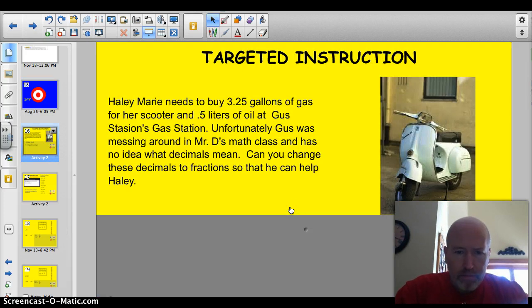Haley Murray needs to buy 3.25 gallons of gas for her scooter and 0.5 liters of oil at Gus Station's gas station. Unfortunately Gus was messing around in Mr. D's math class and has no idea what decimals mean. Can you change these decimals to fractions so that he can help out Haley? There's a secret lesson in here too. Pay attention during my math class.